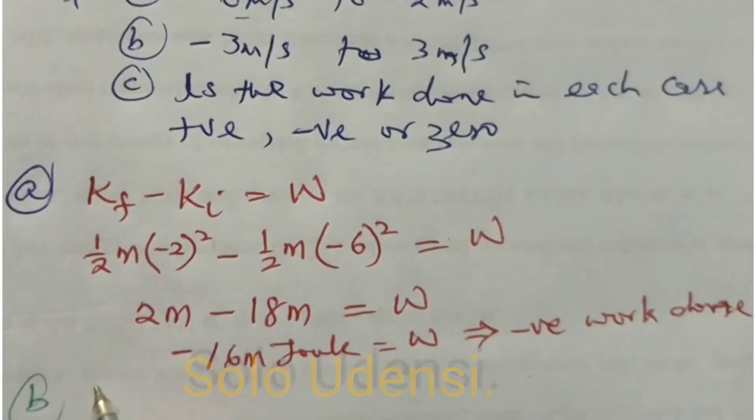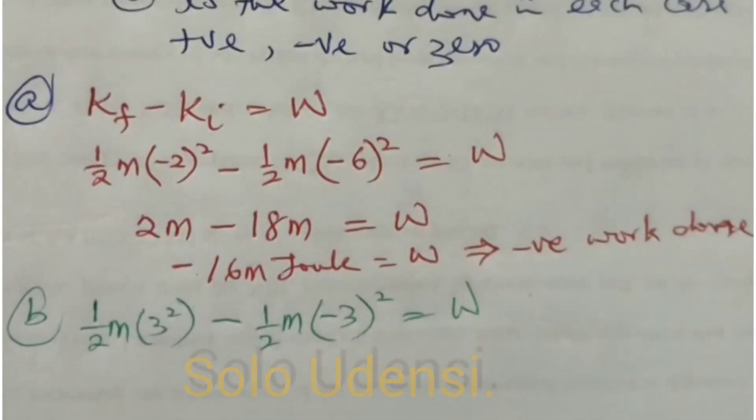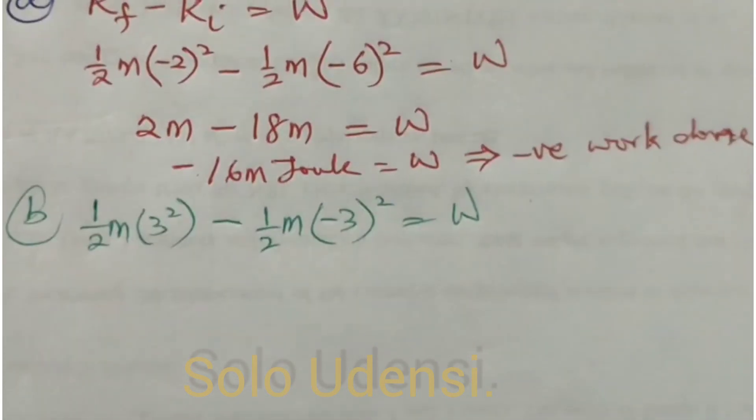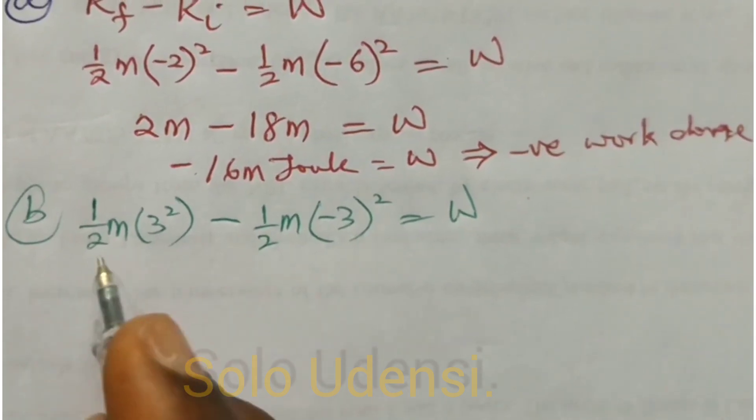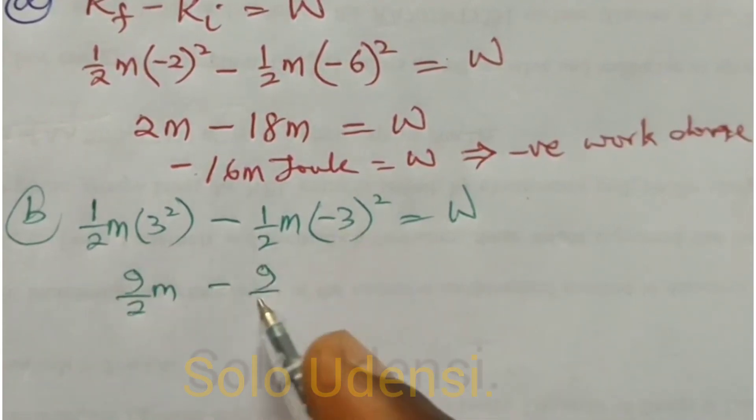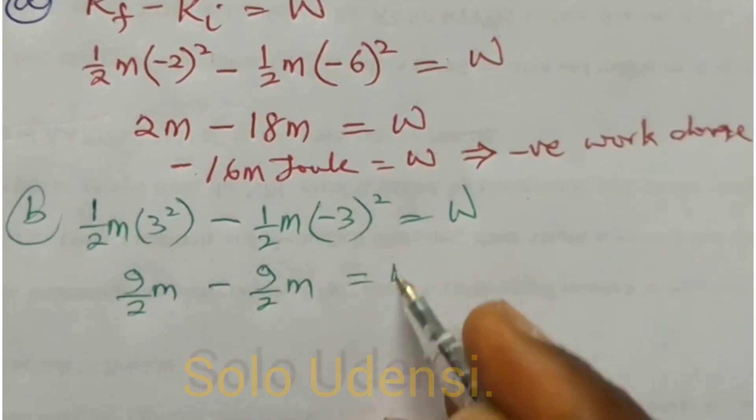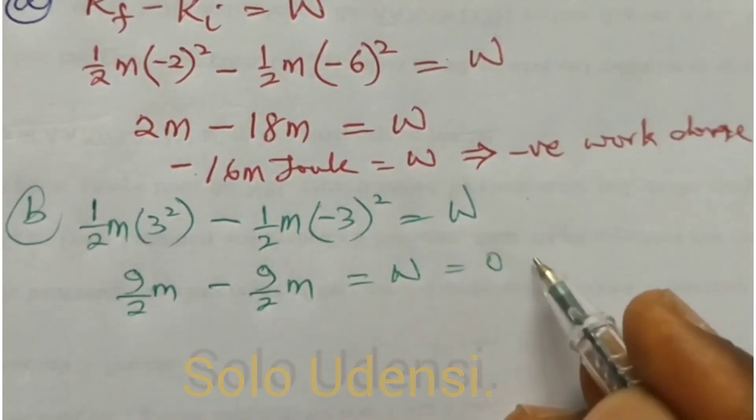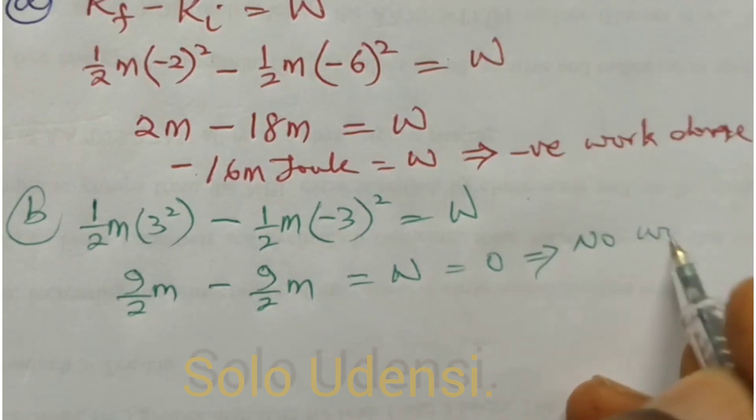For the next one, the final kinetic energy is ½m(3)² minus initial kinetic energy ½m(-3)² is equal to W. So what it means is that 9/2 m minus 9/2 m is equal to work. This minus this is zero, that means that no work or zero work is done.